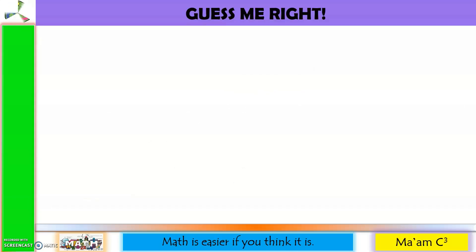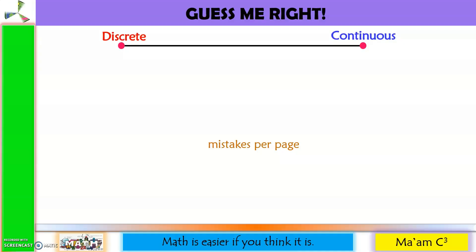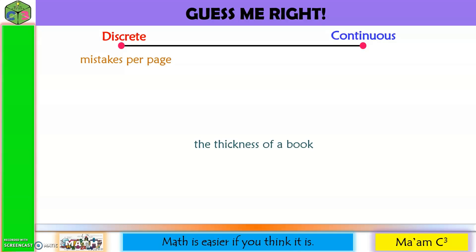Let's have an activity called Guess Me Right. I have here two groups: discrete and continuous. All you have to do is guess into which group the phrases that flash on your screen should go. Number 1: mistakes per page — this goes to discrete. Next: the thickness of a book — this goes to continuous.